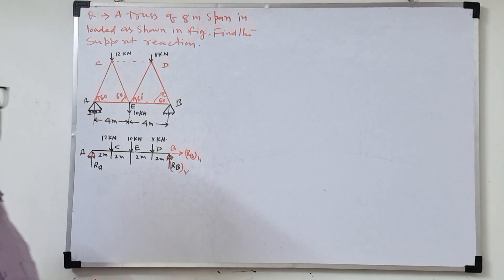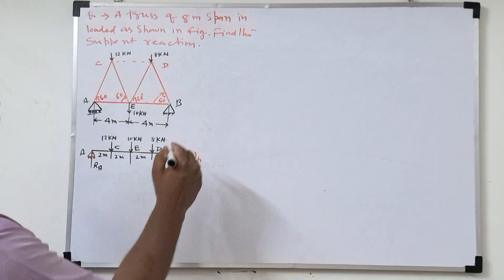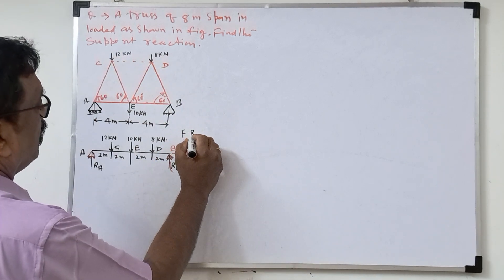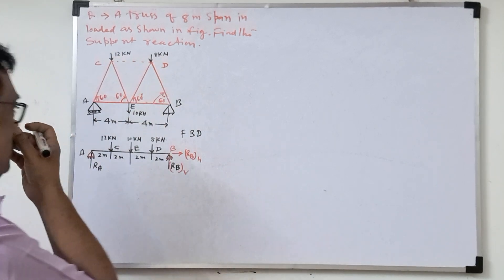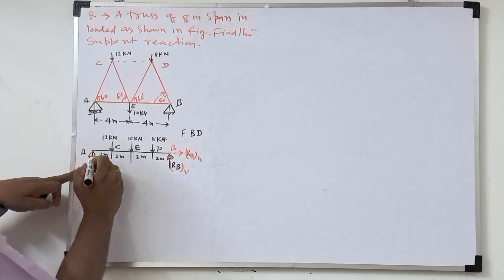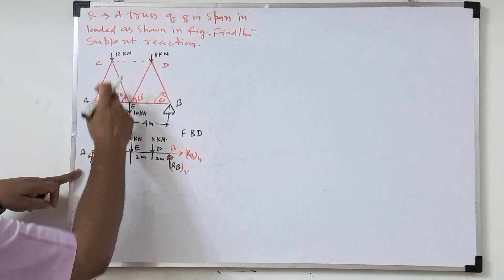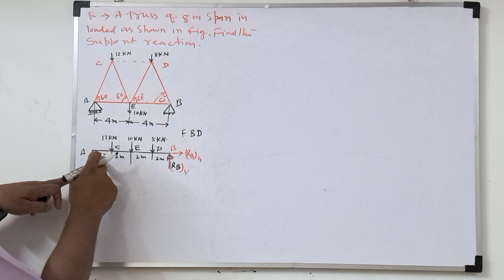So what we do first we draw the free body diagram for this given truss. So A, as it is roller support, RA reactions will act here. Reactions will be RA. Then 12 kilonewtons, 2 meter, because total is 4 meter, so 2 meter.